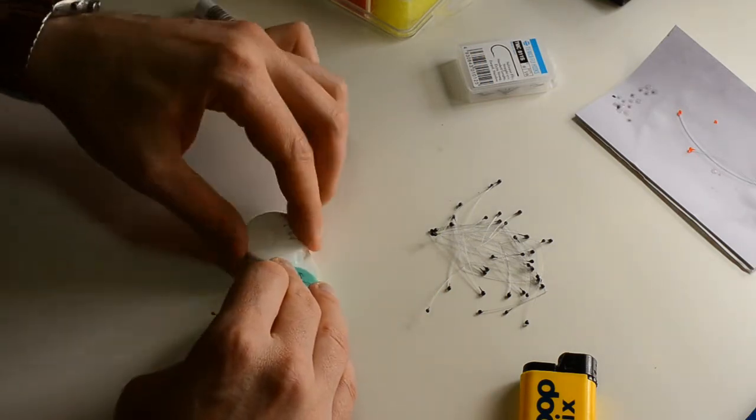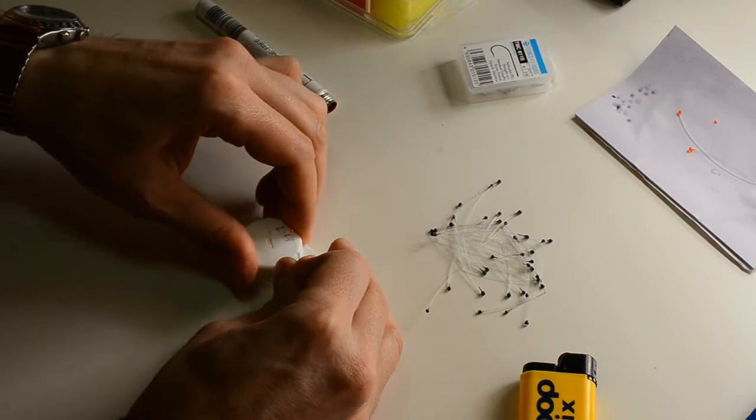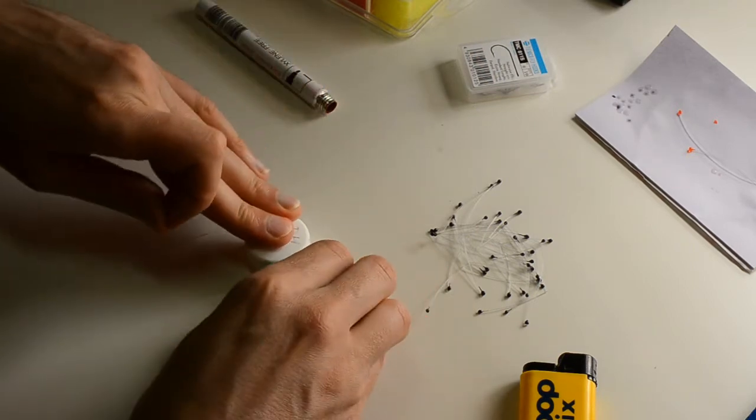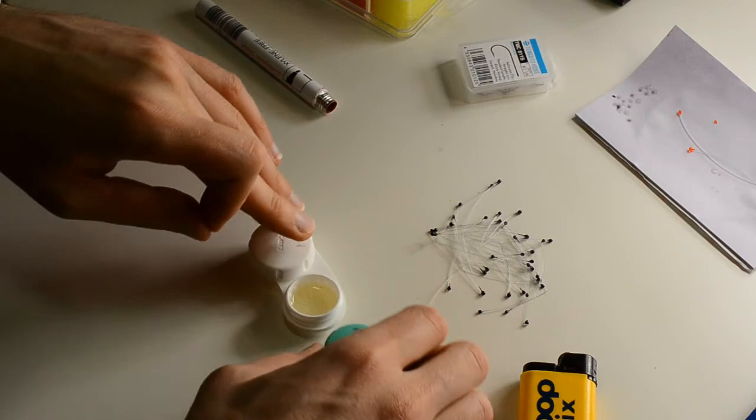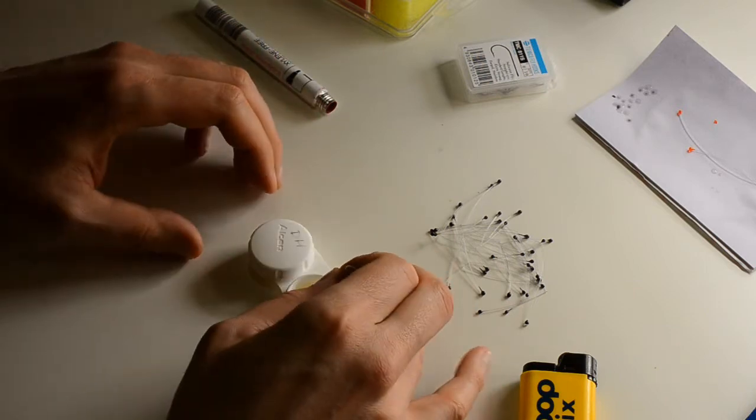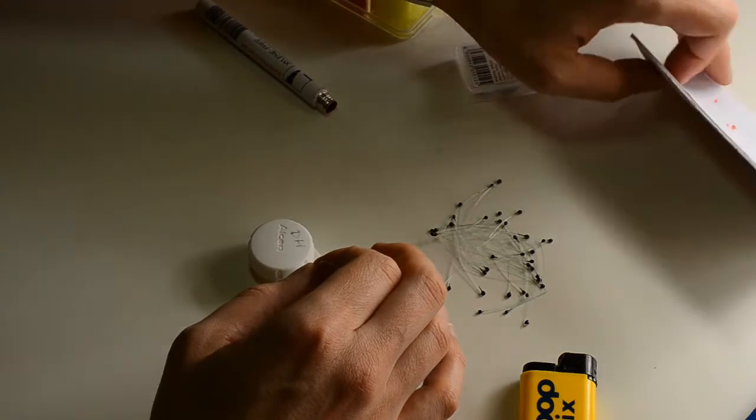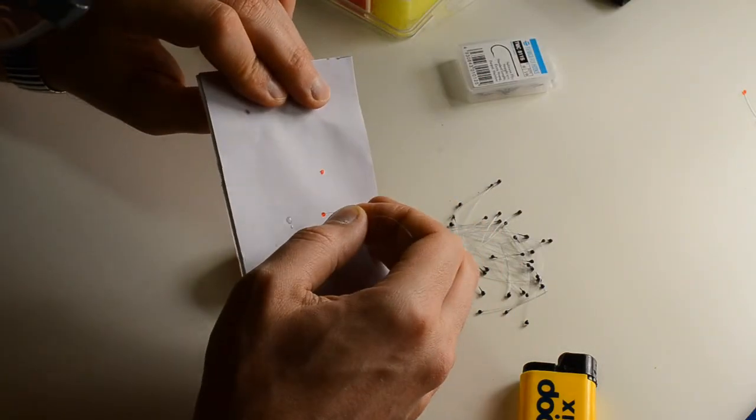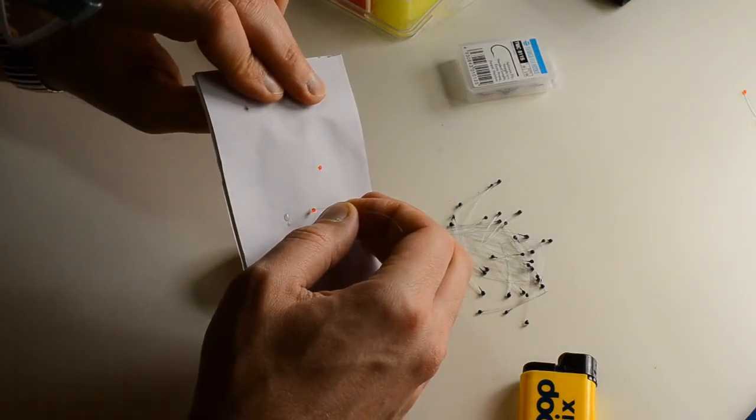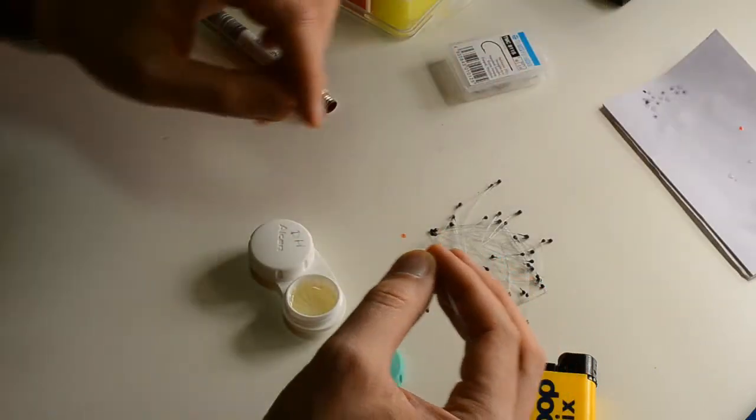I'm just going to put the lid back on. And I'm going to take the other lid off where I have my super glue. I'm going to dip it in. And I'm just going to touch the post-it note to remove the excess.